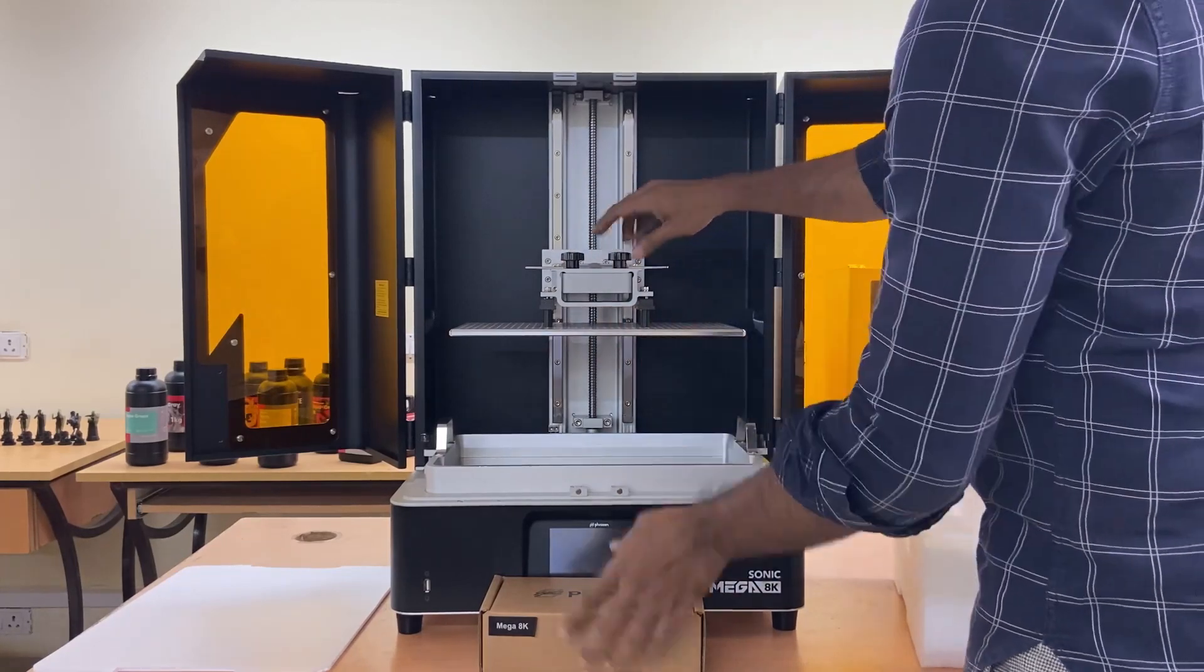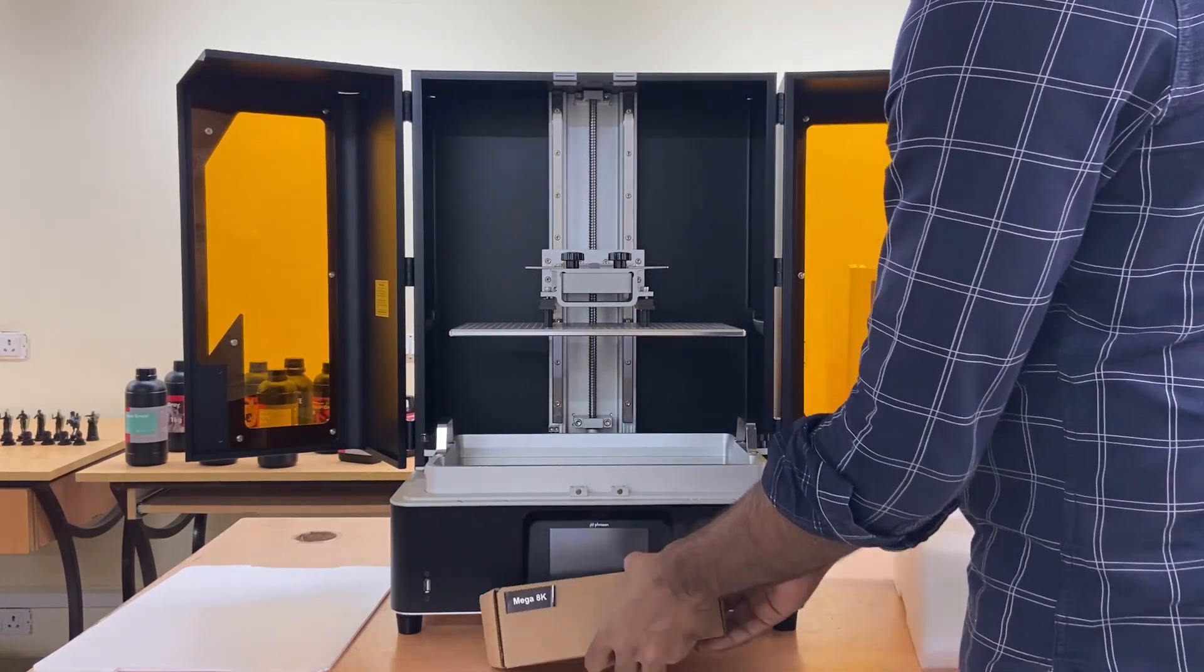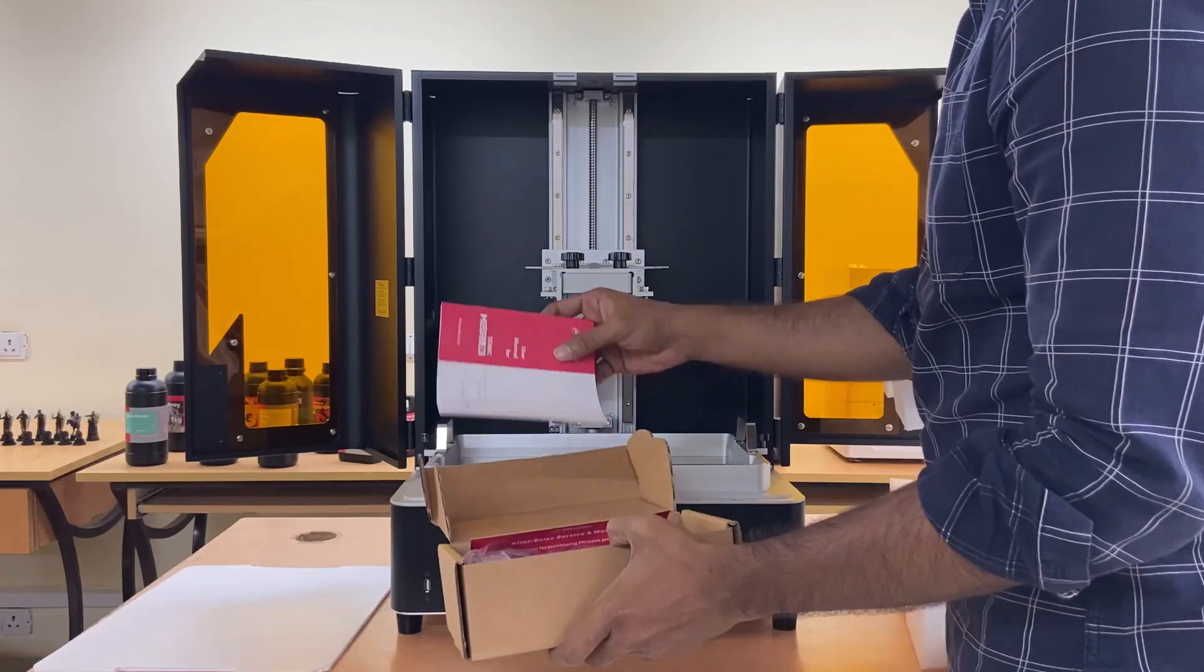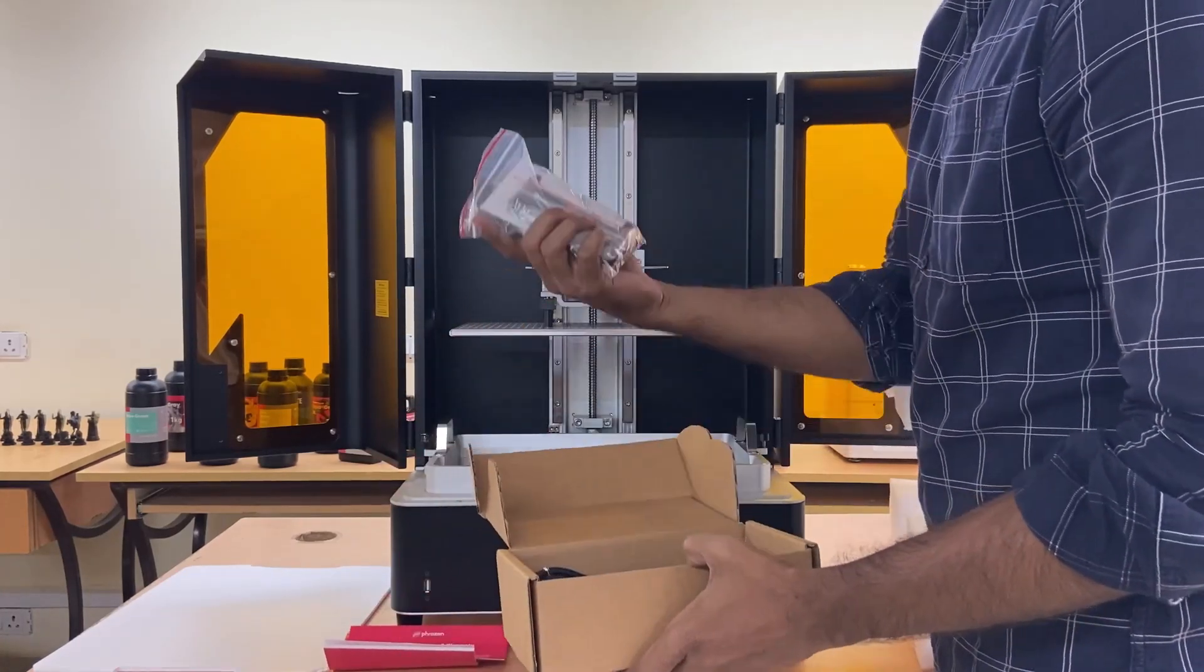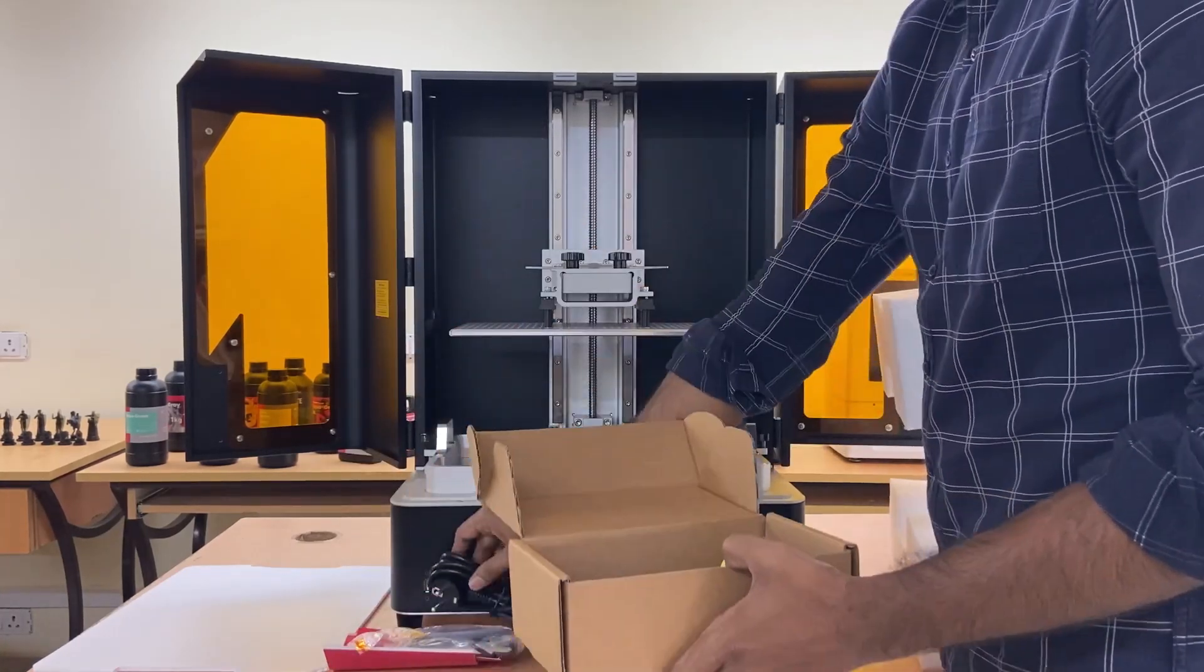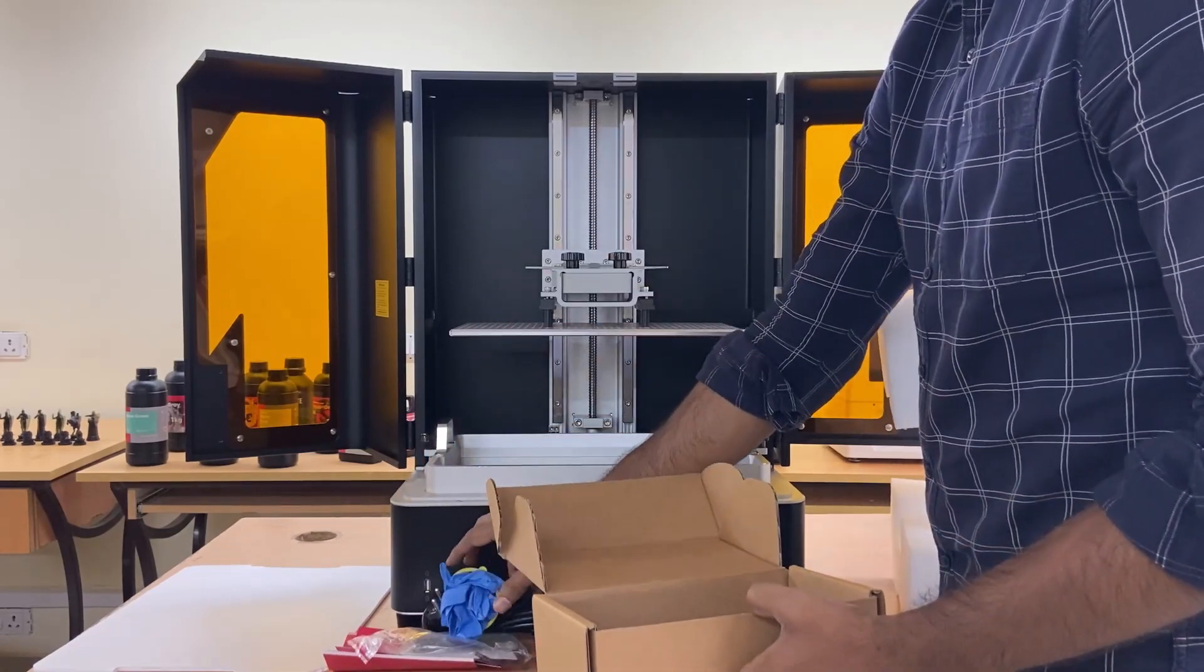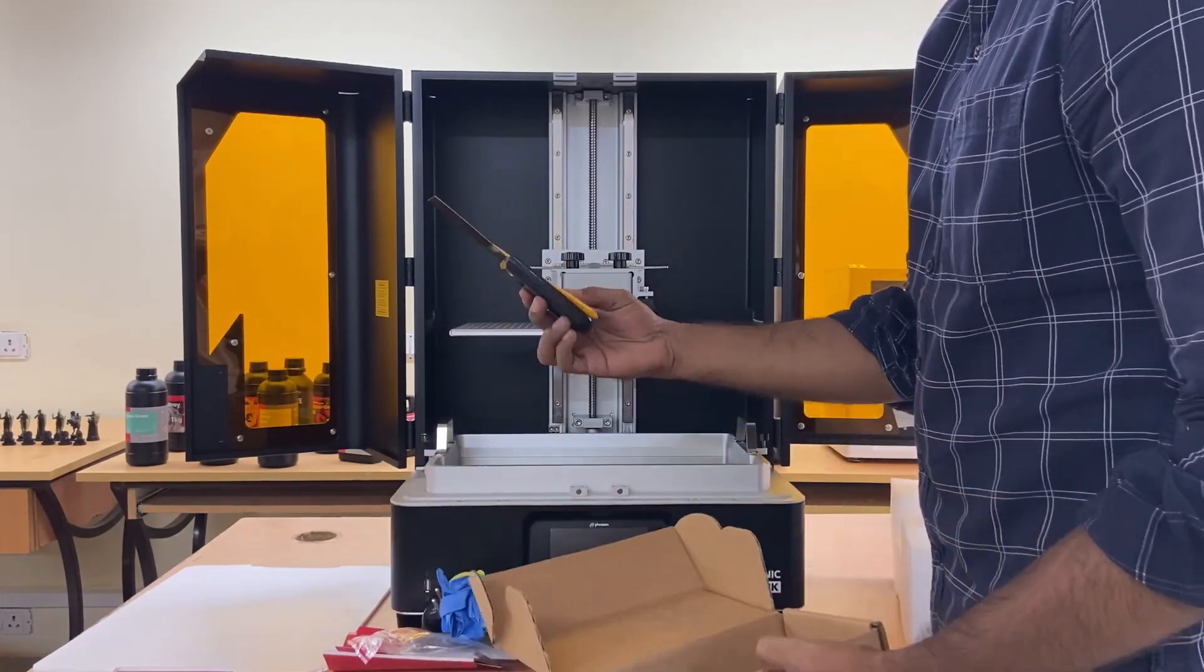The Sonic Mega 8K starter kit includes manual, tools like sandpaper and allen key, pen drive with slicer software, gloves, funnel, power cable compatible for Indian socket and scraper tools to remove printed parts.